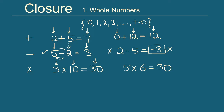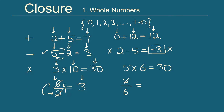Now let's do division. Take 6 divided by 2 — we get 3, a whole number. But if we reverse the order and take 2 divided by 6, we get 2/6, which simplifies to 1/3. This is not a whole number. So like subtraction, for division we cannot guarantee we will always get a whole number. Whole numbers are not closed under division.